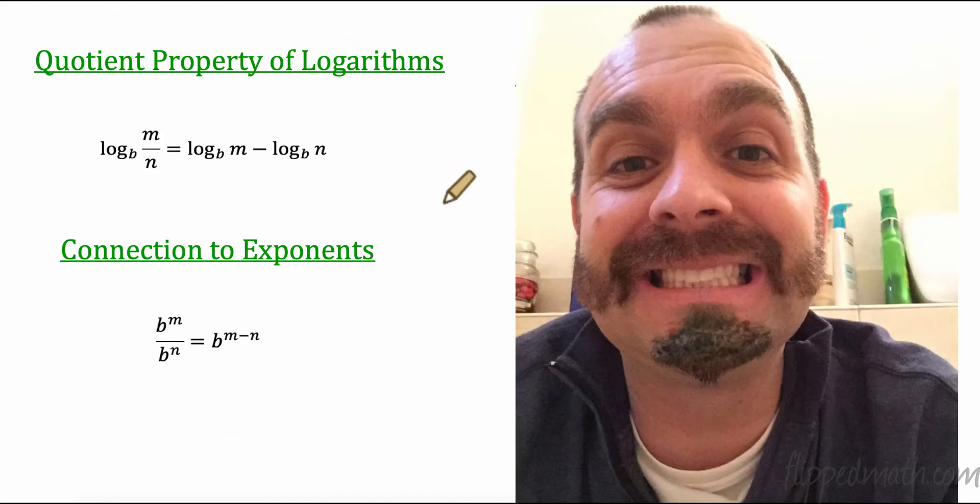So let's formalize this a little bit. This is going to be called the quotient property of logarithms. Whenever we have a log with a base b, whenever I divide them, I will be subtracting the logs separately. So I have log base b of m minus log base b of n. And how does that connect to our exponent rules? Well, remember, when I have the same base and I'm dividing, I keep the base and I subtract the exponents.